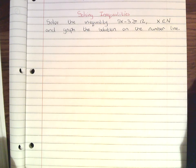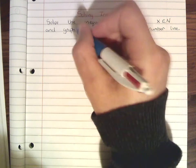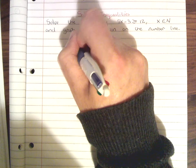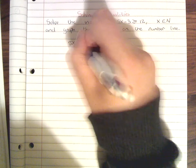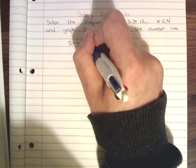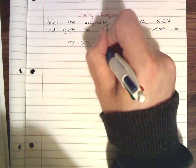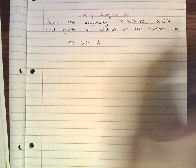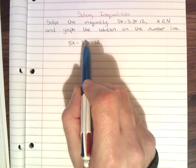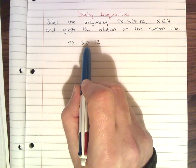So let's work through this question. We write out our equation: 5x minus 3 is greater than or equal to 12. What we need to do is get x on its own. The first thing is to get rid of the numbers around x — we treat this just like an equation.